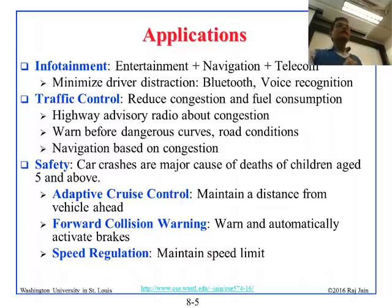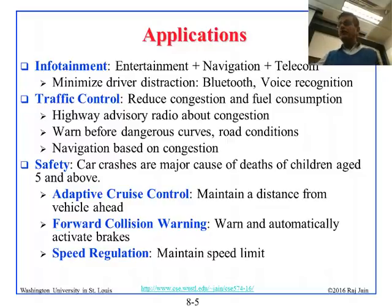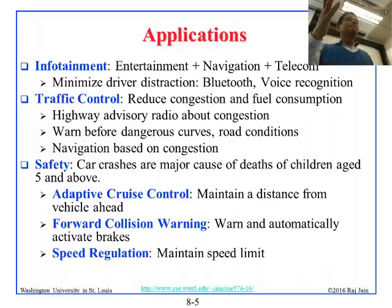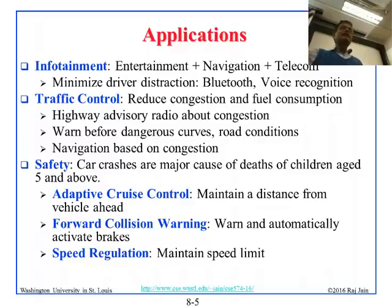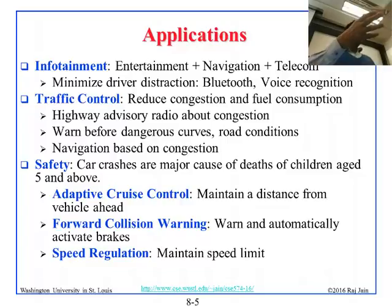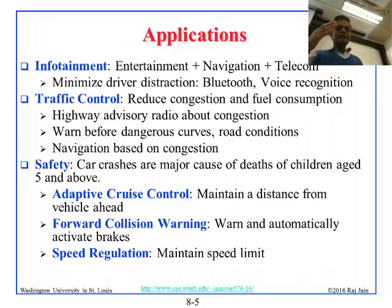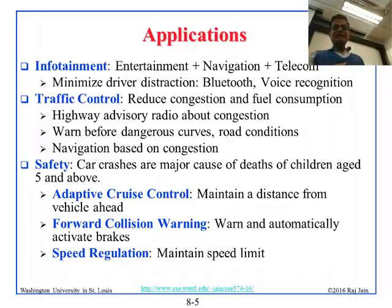Many of these safety features — like forward collision warning — are there without any network. You could just put a laser sensor that detects an impending collision and stops the car. Some features have already come in without VANETs, and VANETs have been talked about for a long time but have not fully arrived yet.